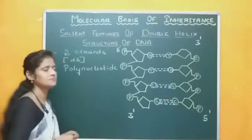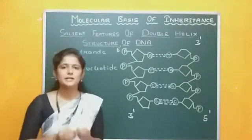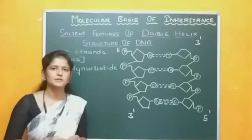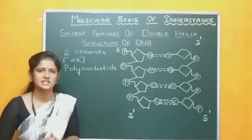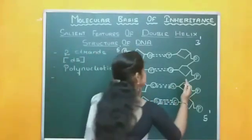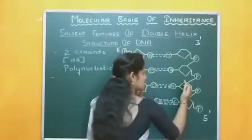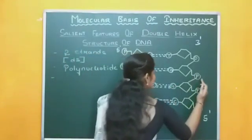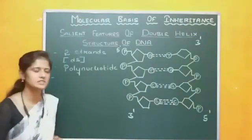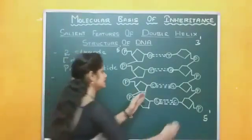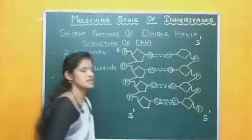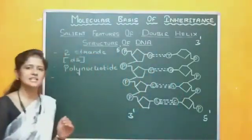The third point: the pentose sugar and the phosphate group form the backbone of the DNA. Now we can see this is the pentose sugar and the phosphate forming the backbone of the DNA, and the nitrogenous bases are projected inside.